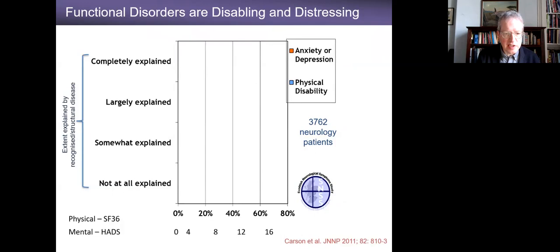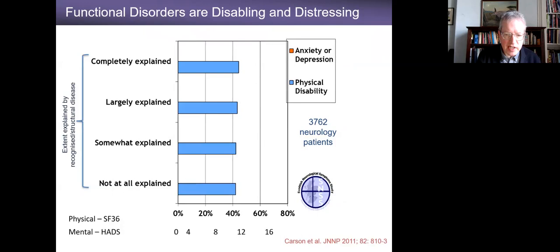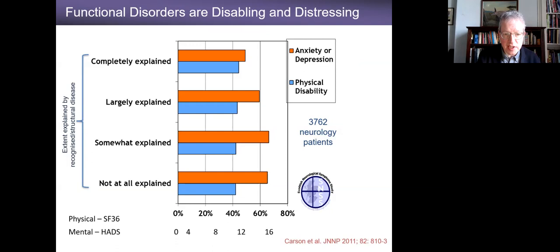These patients are also very common, even though many people outside neurology think this is a rare problem. It really isn't — it's a common cause of disability, particularly in younger people. When we looked at nearly 4,000 patients, we found that self-rated physical disability was the same in patients where the neurologist said there was no structural pathophysiological disease as in patients where there was a clear structural explanation. There's very little correlation between the diagnosis and levels of physical disability, and as you might predict, higher rates of anxiety and depression.